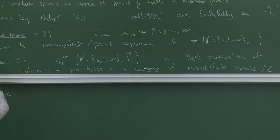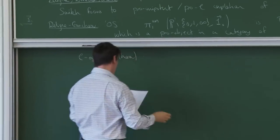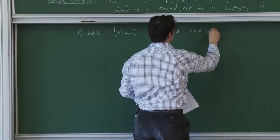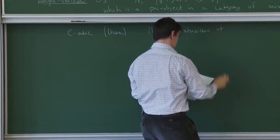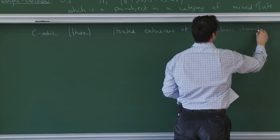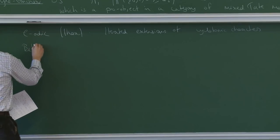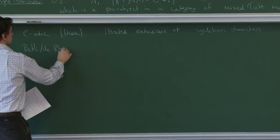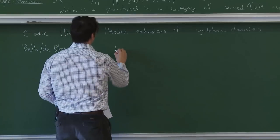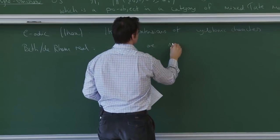Concretely, in the l-adic setting especially studied by Ihara and his school, these are iterated extensions of cyclotomic characters. The Betti and de Rham realizations — or rather their comparison — leads to periods, and the periods of this object are given by certain integrals which are multiple zeta values.